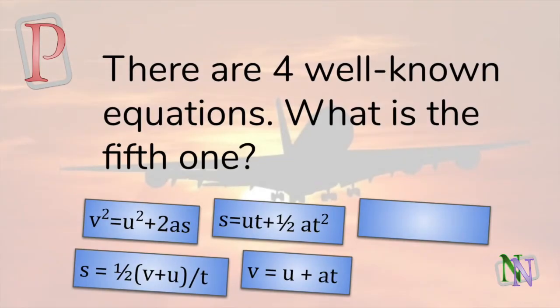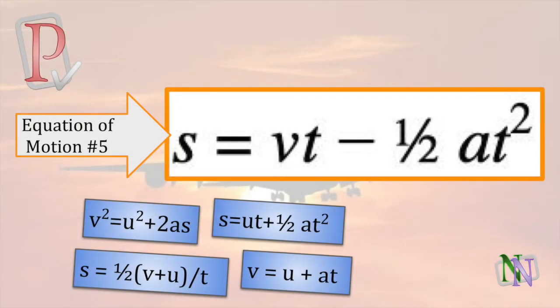Here is the answer to the puzzle we asked at the beginning. Most textbooks mention four equations, and it's true that we can calculate anything using these, but there is a fifth one, which is the equation which omits the initial velocity U. It is found using the same method we used to prove S equals UT plus a half AT squared. The result is very similar. S equals VT minus a half AT squared.